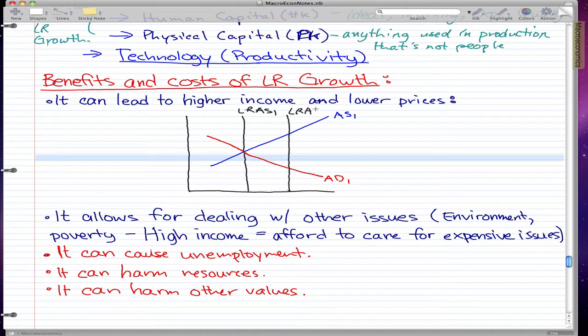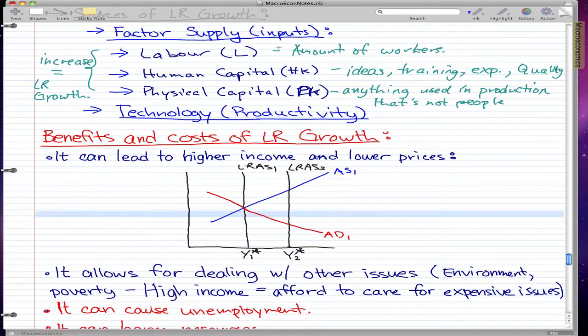long-run aggregate supply, LRAS2, and this will be Y1 star. This is the first equilibrium, and it just increased to this new equilibrium. If we have long-run growth, then one of these probably happened: technology probably was better,